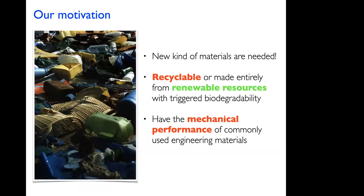Heavy environmental legislation forces us scientists to develop new kinds of materials that are recyclable or made entirely from renewable resources that could degrade on demand. More importantly, these materials should have the mechanical performance of commonly used engineering materials. You have two ways of making these materials: either you chain a chemist next to their lab bench and force them to derive renewable polymers from plant-based resources that have the mechanical performance of engineering materials.